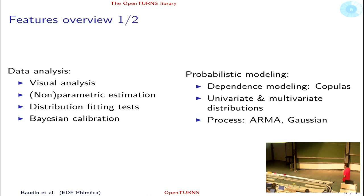This is an overview in two slides of the many features in OpenTURNS. There are features for data analysis with visual analysis, non-parametric and parametric estimation of distributions, distribution fitting tests, and Bayesian calibration. There are also powerful features for probabilistic modeling, including dependence modeling using the Copula theory. OpenTURNS is very good at it. There's also a large number of univariate and multivariate distributions, and we can model stochastic processes, either ARMA or Gaussian processes. For example, if you are looking for probabilistic problems and you can't find a solution in the scipy.stats package, it might be interesting for you to look at OpenTURNS on this point.